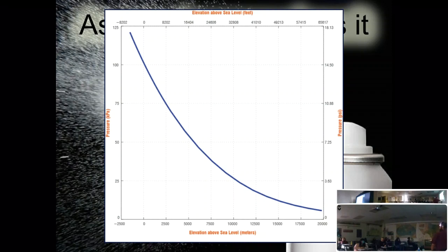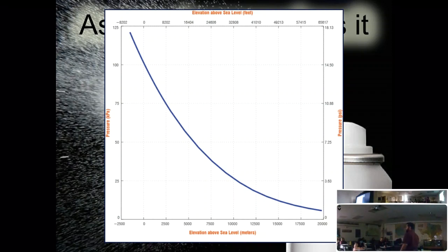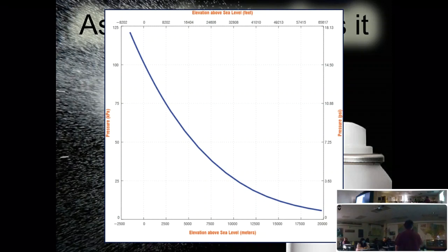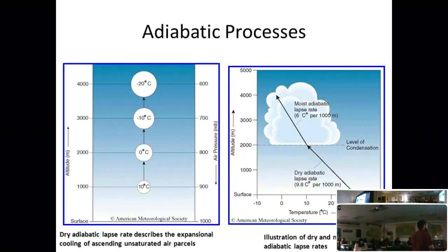When you pump up a bicycle tire with a hand pump, the pump gets hot — that's because you're compressing the air and heating it up. The opposite is also true: when you decompress air, it cools. So air that rises in the atmosphere depressurizes and cools; air that sinks gets compressed and heats up.